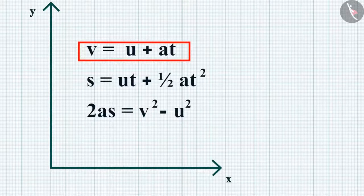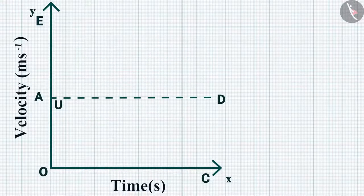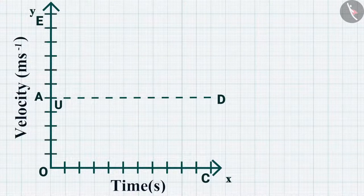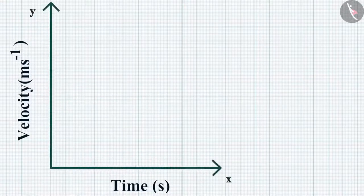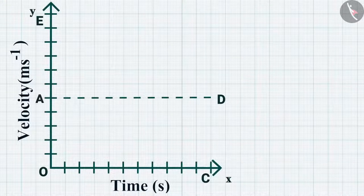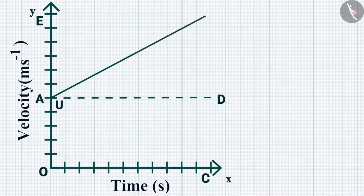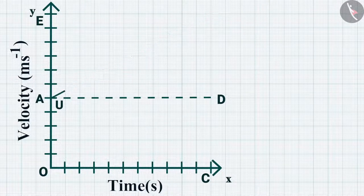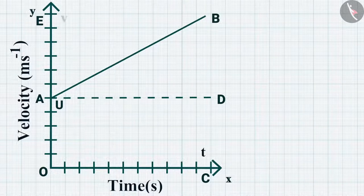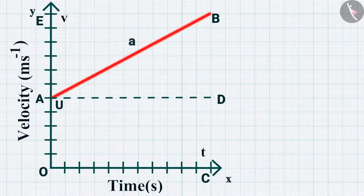Let us start with the first equation — the equation for velocity-time relation. Consider a velocity-time graph where time is taken along the x-axis and velocity is taken along the y-axis. According to this graph, the object starts at point A with an initial velocity of u and moves with uniform acceleration, reaching a final velocity v at point B in time t. Let the change in velocity at a uniform rate be a.